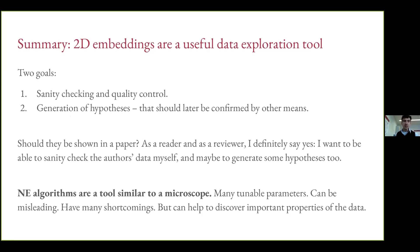I see these methods as a tool similar, in some sense, to a microscope. People sometimes criticize the many tunable parameters in t-SNE and UMAP — but of course a microscope also has many tunable parameters: you can change depth, dye the cells, switch from optical to EM or two-photon microscopy. You will see different things, and some may be misleading. Every microscope has shortcomings. Nevertheless, a microscope can help you discover important properties of your object of study. If you want to learn something about your object, you should look at it — and that's what t-SNE, UMAP, and other neighbor embedding methods allow you to do with a dataset.